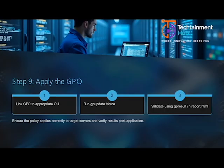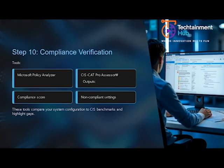Use CIS benchmark PDFs as your baseline reference. Microsoft's Security Compliance Toolkit and PowerShell cmdlets like Get-GPOReport, Backup-GPO and Restore-GPO help automate reporting and recovery. CIS-CAT remains the primary compliance verification tool.